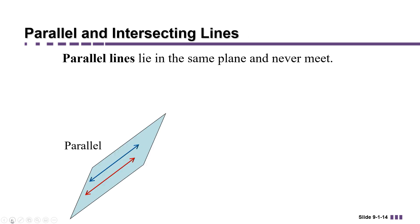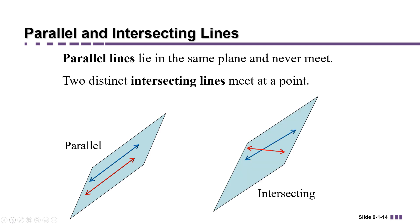We can also talk about parallel lines. Parallel lines lie in the same plane, but never meet. If you have two lines that lie in the same plane, but are not parallel, they must meet at exactly one point. These are called intersecting lines.